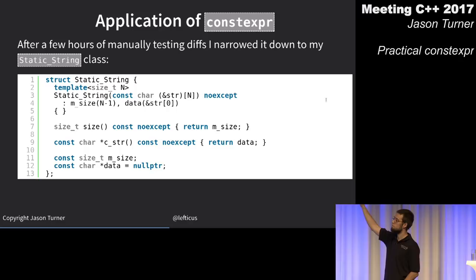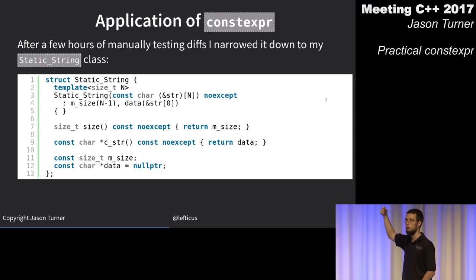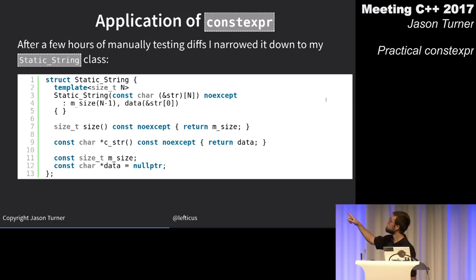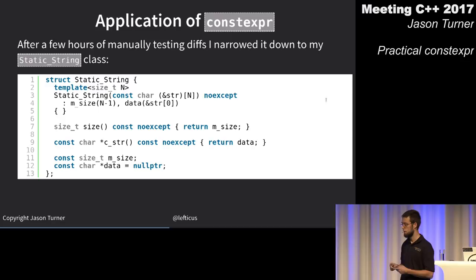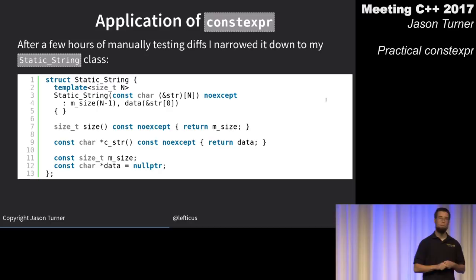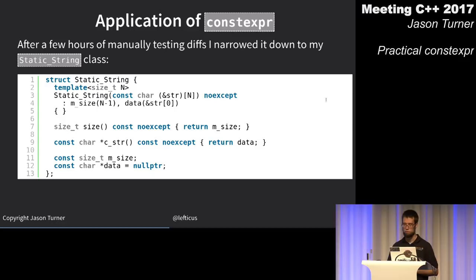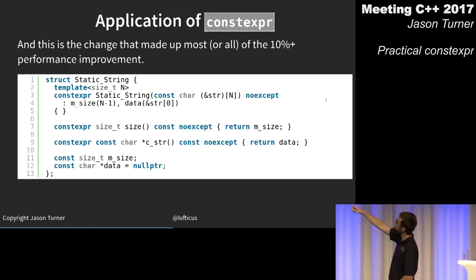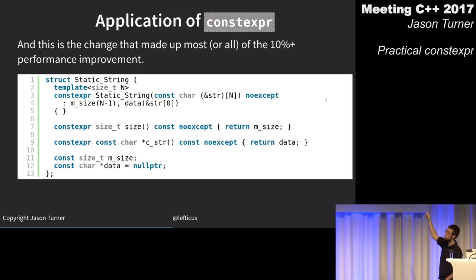static_string is used for all comparisons — checking for operator matches or built-in keyword matches during parsing. Making it constexpr — just three lines (lines 3, 7, and 9) — resulted in approximately all of the performance changes seen in ChaiScript's startup time.